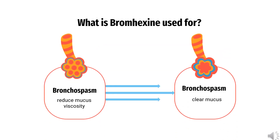What is bromexine used for? Bromhexine is used alone or with other ingredients such as diphenhydramine, dextromethorphan, and guaifenesin to reduce mucus viscosity and clear mucus in conditions associated with mucus hypersecretion, including the common cold, influenza, respiratory tract infections, or other conditions.